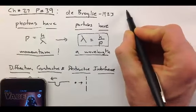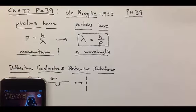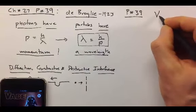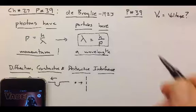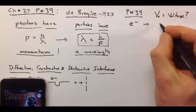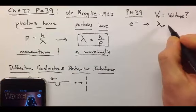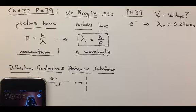All right, let's jump in and solve a problem here using De Broglie wavelengths, and it is going to be problem 39 from chapter 27. So, in this problem, we are looking for a voltage. And this problem says, what voltage would an electron have to be accelerated through so that the wavelength of this electron would be 0.24 nanometers? So this is strange. We thought electrons were particles. How can they have a wavelength?